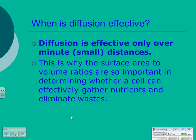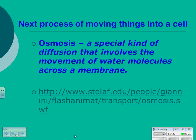This is why surface area to volume ratios are so important in determining whether a cell can get what it needs in nutrients and eliminate waste, because diffusion only works so well over those distances. The next process is osmosis. Osmosis is a special kind of diffusion that involves the movement of water molecules across a membrane. It has to be water molecules moving across a membrane in order to be osmosis.